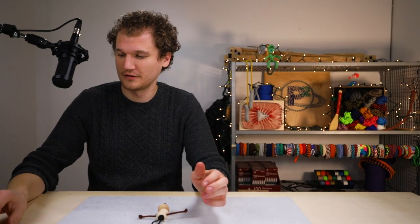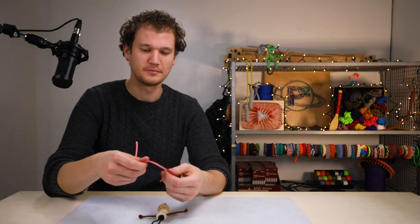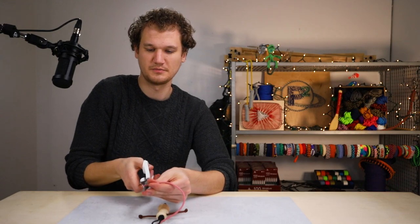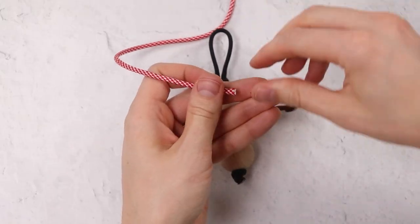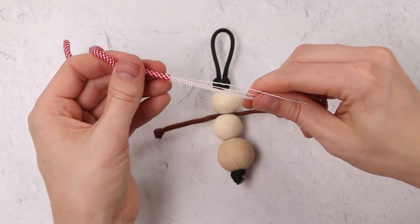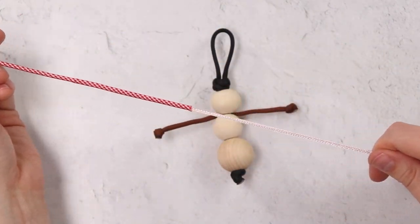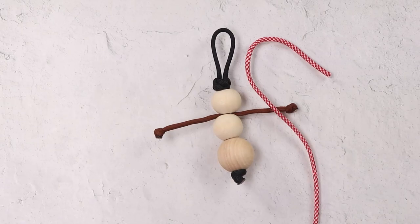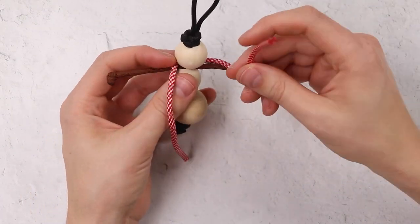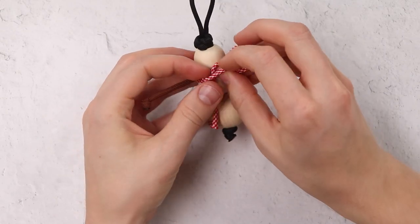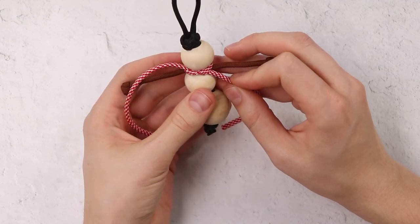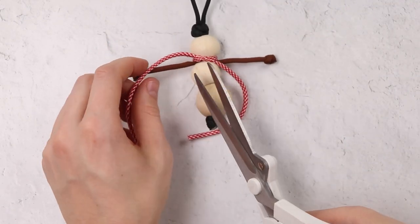All that's left to do now is add the scarf. We'll take our candy cane cord and take the inner strands out of that. Clip off both ends and just remove all those inner strands. Then we're going to tie that on with just a simple overhand knot as well. There we go. And then clip your scarf to whatever length you want it to be.